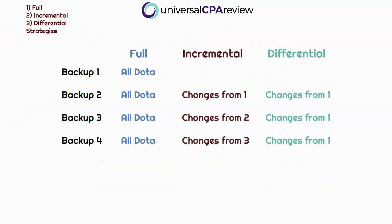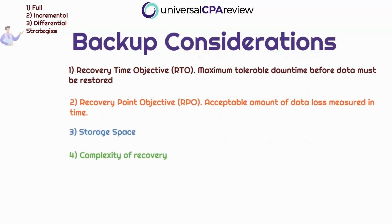Here's a chart that compares full, incremental, and differential. With full backup, each time you back up you're looking at all data. With incremental, you look at changes from backup one, then changes from backup two, then changes from backup three. But differential is only looking at changes since backup one, because that was the last full backup.